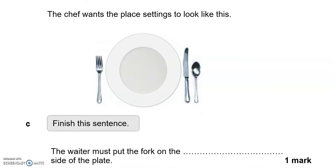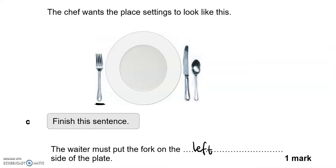The chef wants the place settings to look like a specific layout. Finish this sentence: the waiter must put the fork on the which side of the plate? As you can see the fork is on the left side of the plate.